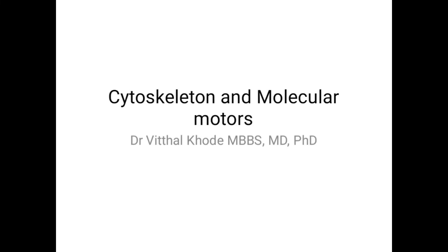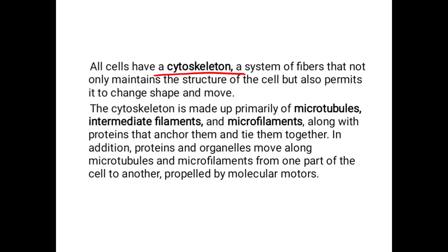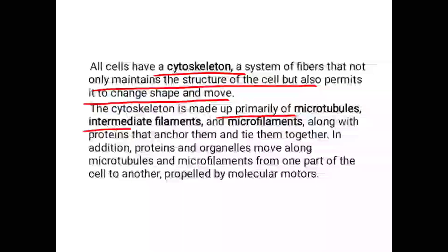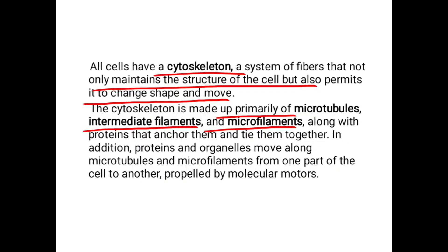In this class we'll learn about cytoskeleton and molecular motors. All cells have a cytoskeleton, a system of fibers that not only maintains the structure of the cell but also permits it to change shape and move. The cytoskeleton is made up primarily of microtubules, intermediate filaments, and microfilaments, along with proteins that anchor and tie them together. Proteins and organelles also move along microtubules and microfilaments from one part of the cell to another, propelled by molecular motors.